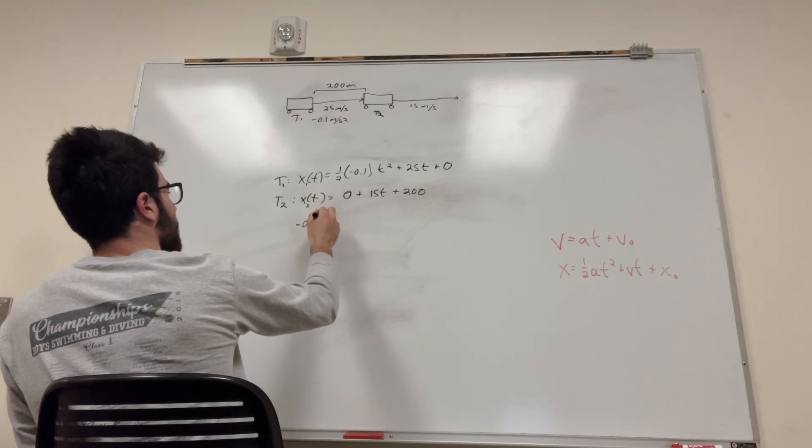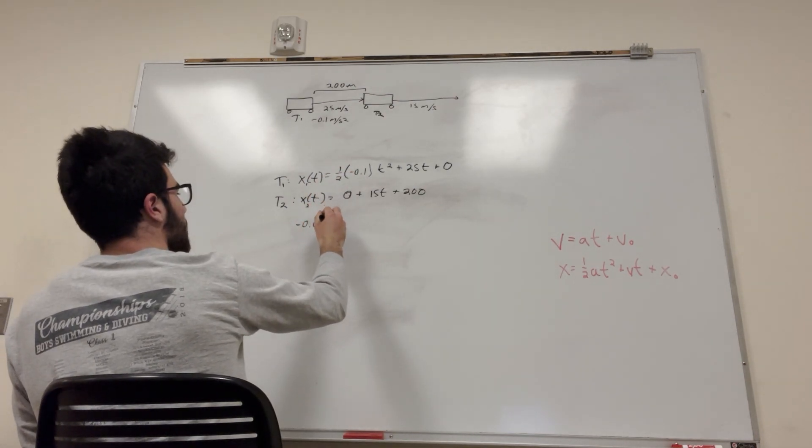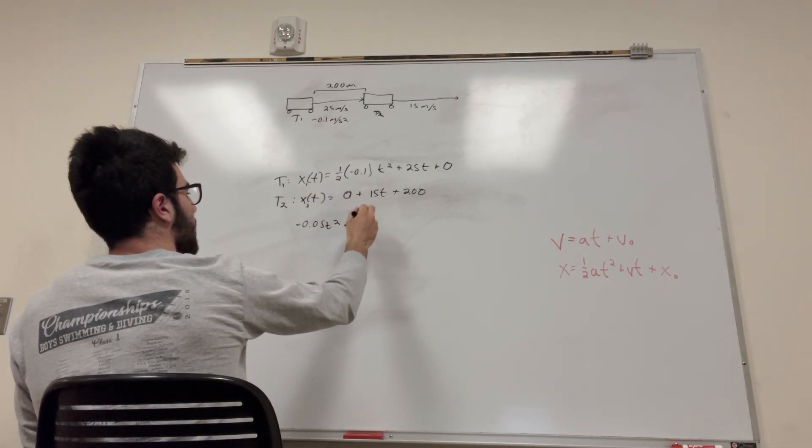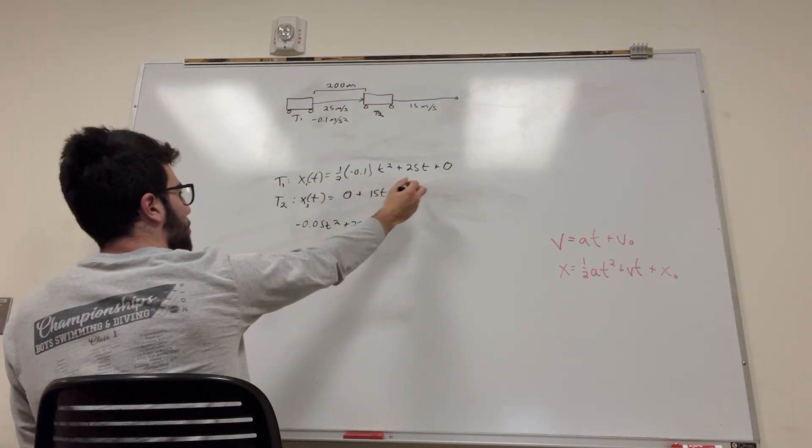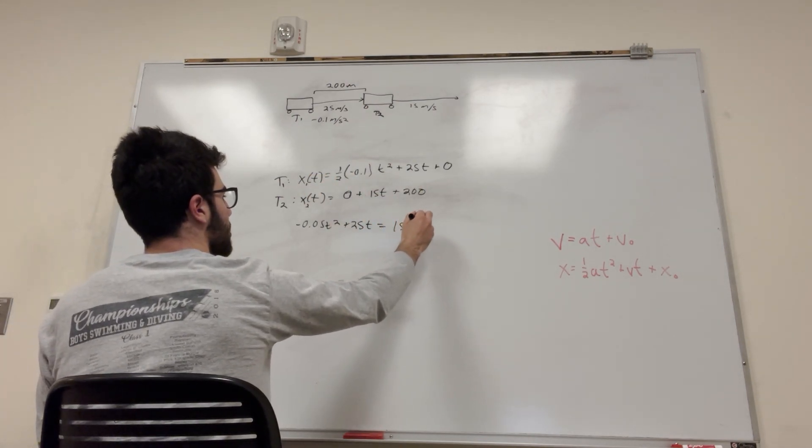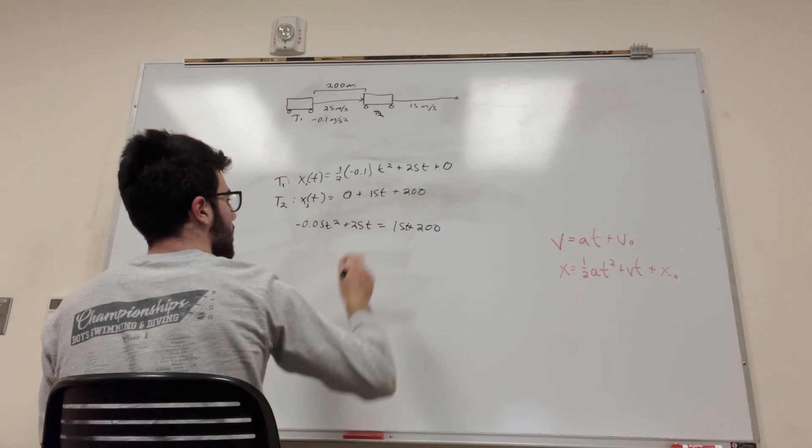So, negative 0.05, because that's half of 0.1, t squared plus 25t is equal to this part, 15t plus 200. Okay.